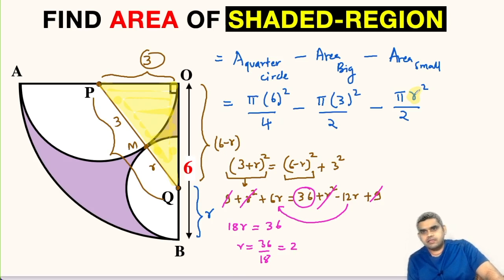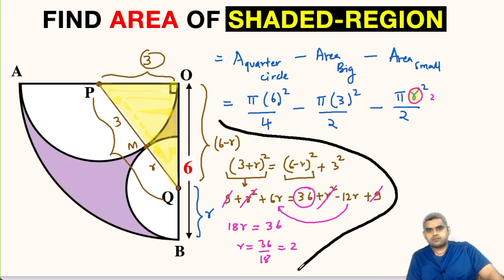We can replace r by 2. Now let us simplify this. So this will be 36 upon 4, which is 9. So first term will be 9π. Second one, 3² π will be 9π divided by 2, then minus 2² will be 4π by 2, that is 2π.